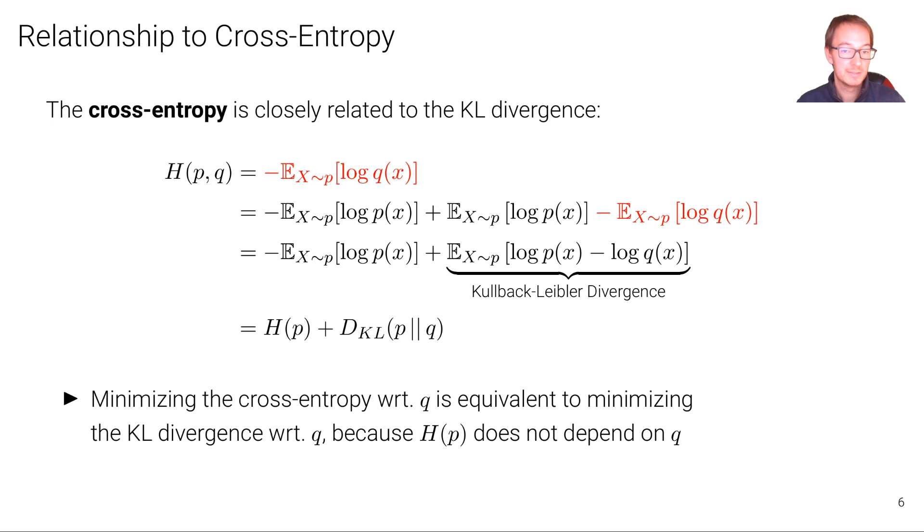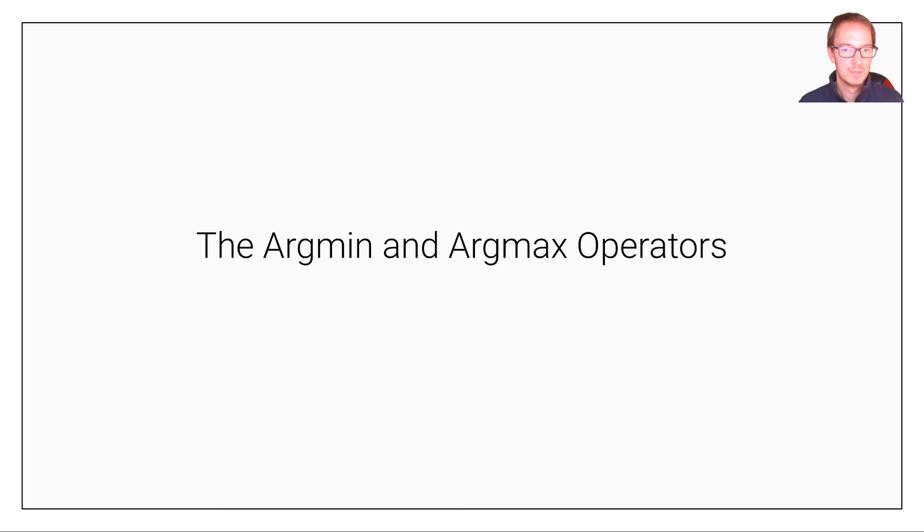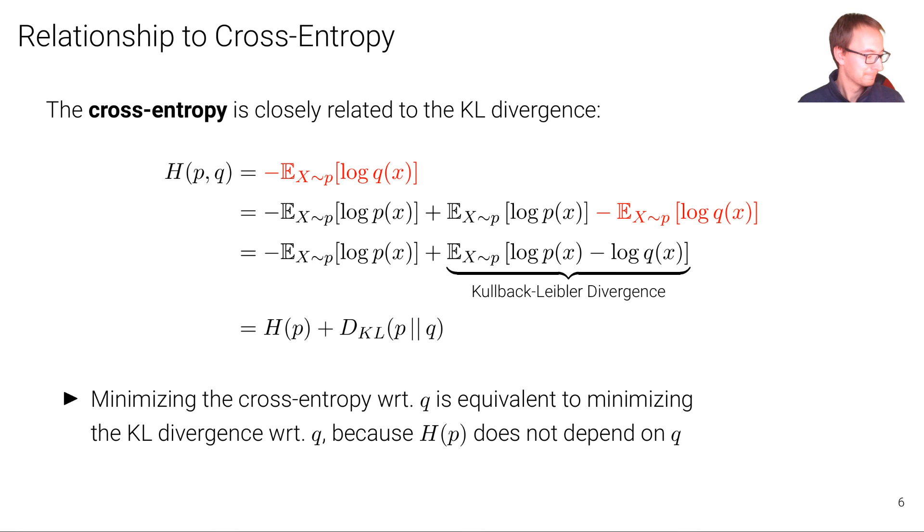And this is also where this intuition comes from, that if you minimize the cross-entropy loss, then what you effectively do is you minimize the difference or the distance or the Kullback-Leibler divergence between the model distribution and the data, the empirical data distribution. So it's quite useful.